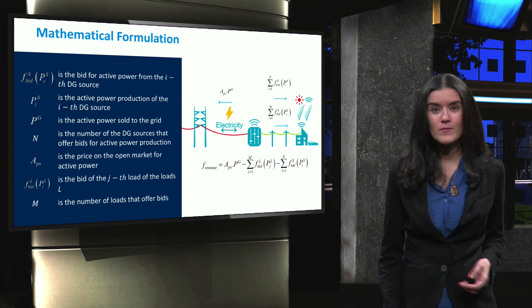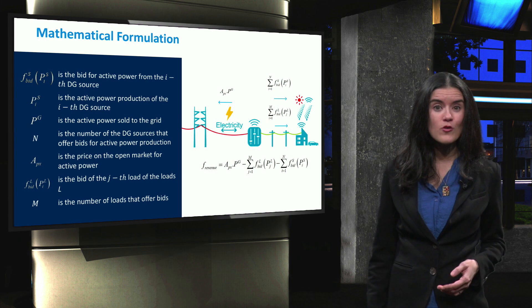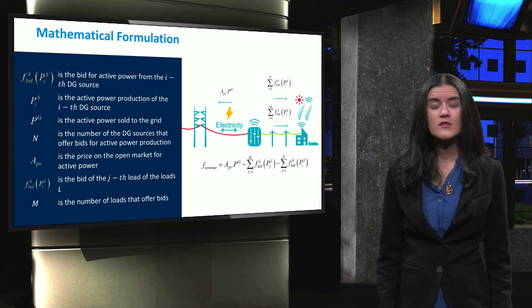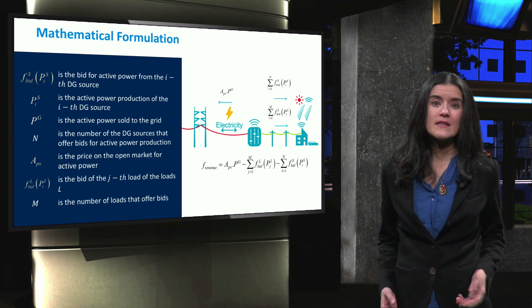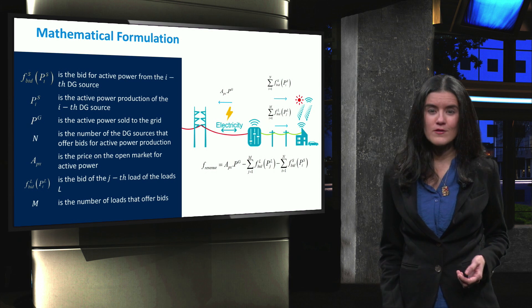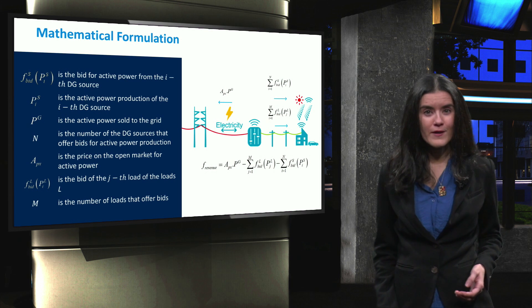In microgrids, the optimization task can be performed by the so-called aggregator. According to the Energy Efficiency Directive, an aggregator is a demand service provider that combines multiple short-duration consumer loads for sale or auction in organized energy markets.